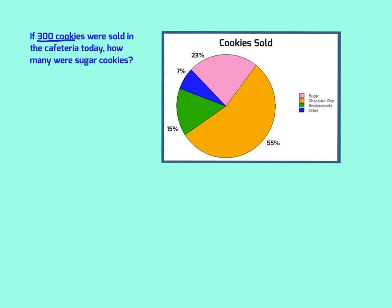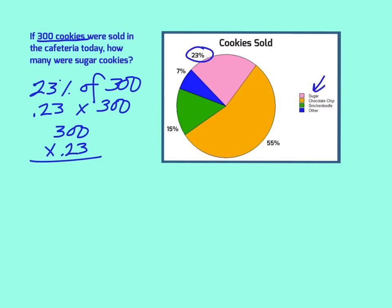If 300 cookies are sold in the cafeteria, how many are sugar cookies? We see the pink one is sugar cookies, so we know 23% of 300. One way to do it is to change your 23% to a decimal, so 0.23 times 300. That's the easiest way if you have a calculator, but of course you can still work it out by hand. Watch your decimals. When you get your answer, there were two decimal places in the question, two in the answer, so we know it's 69 sugar cookies.